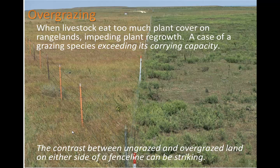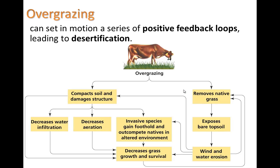Here's another problem that can lead to soil degradation: overgrazing. When livestock eat too much plant cover on rangelands, impeding plant regrowth, it's a case of a grazing species exceeding its carrying capacity. We can see here the contrast between ungrazed and overgrazed land on either side of a fence line. One side has a larger variety of native grasses; the other shows more bare spots and large weedy-type plants that compete more effectively when the soil has been degraded. Overgrazing can set in motion a series of positive feedback loops leading to desertification.